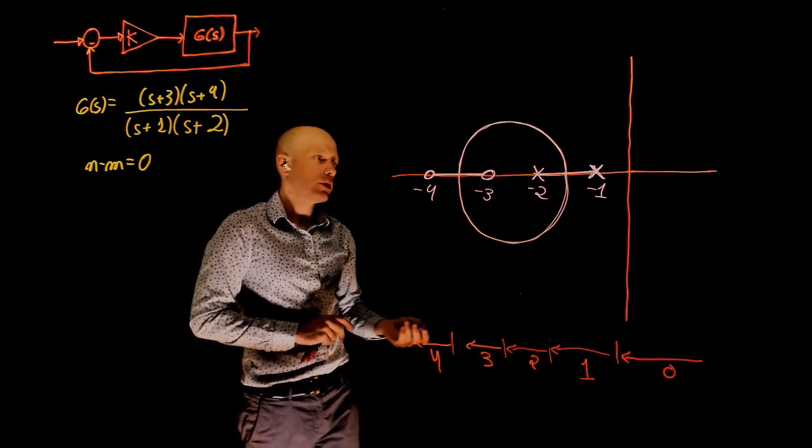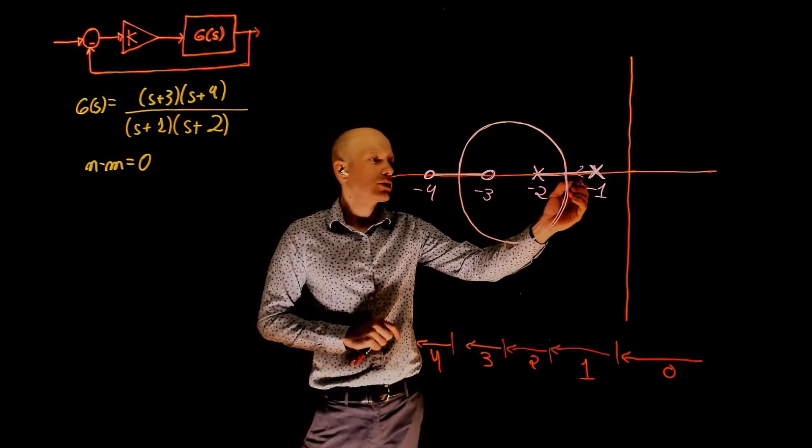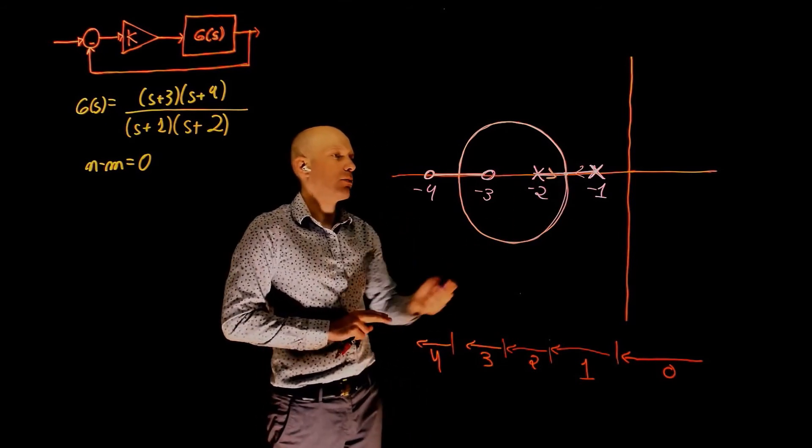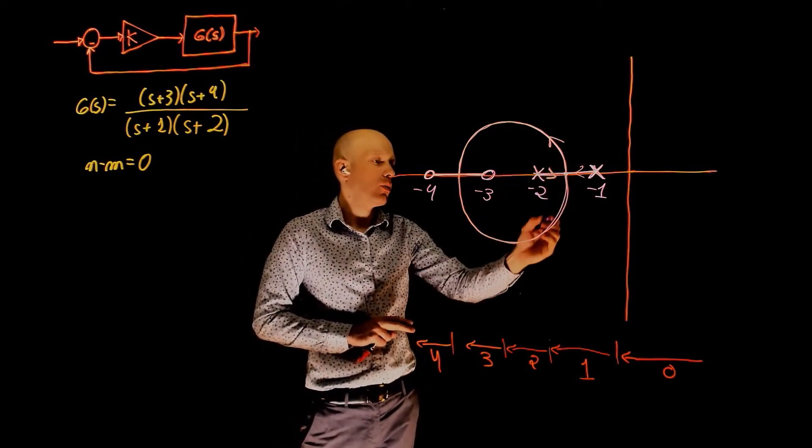So what is happening here? These poles are coming together, break away from the real axis at that point. One goes up, one goes down.